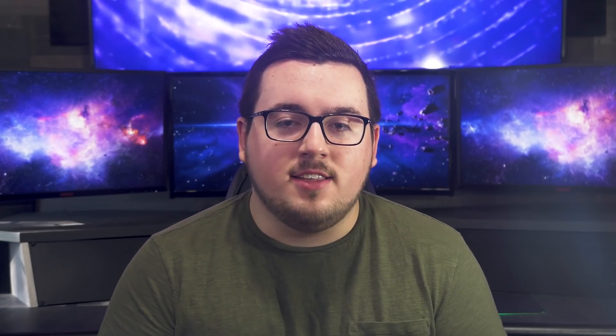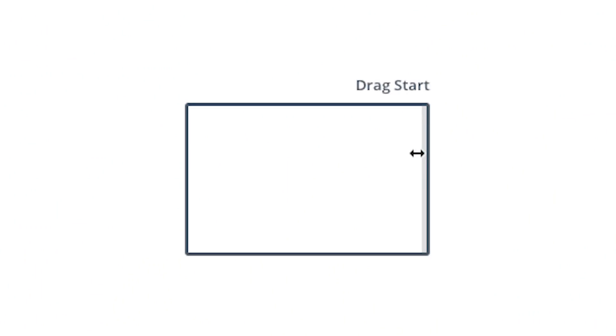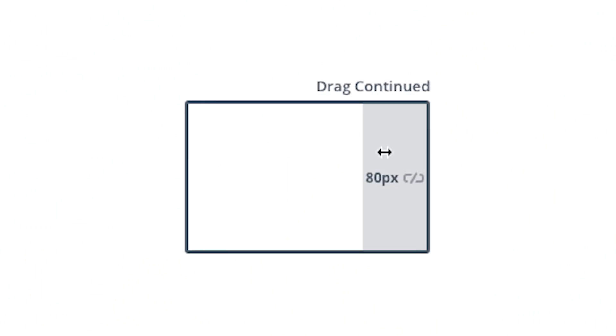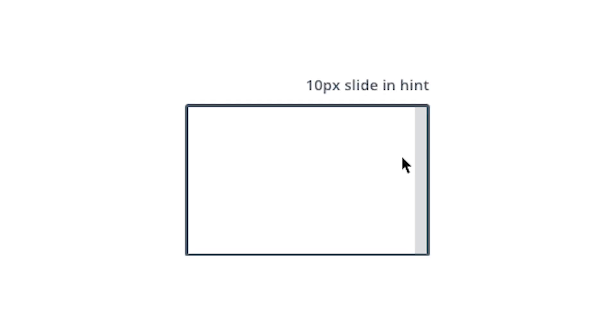The new draggable sizing UI update will make the process of sizing elements in the Visual Builder more intuitive. For example, even if your padding is set to zero pixels, we will be adding helpful hints when hovering near the edge of an element so users can easily begin dragging the size of the padding they need.